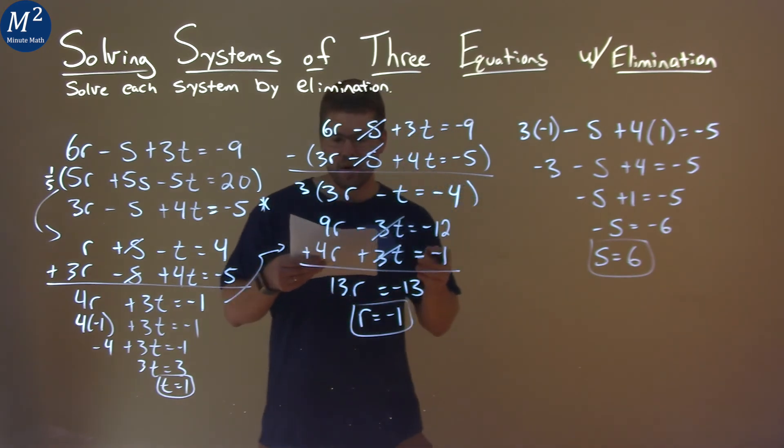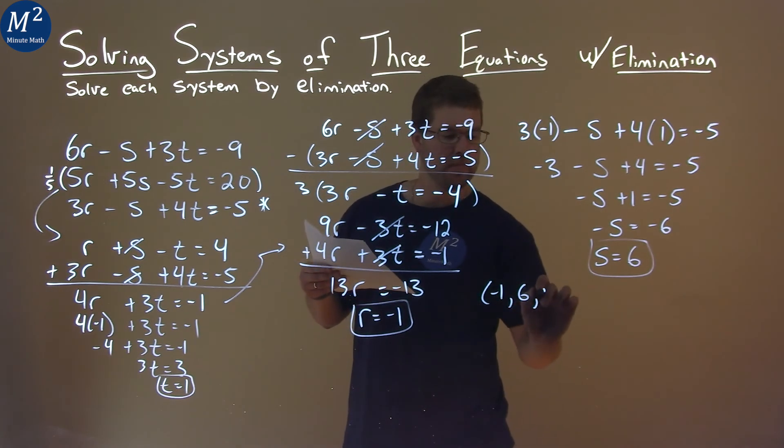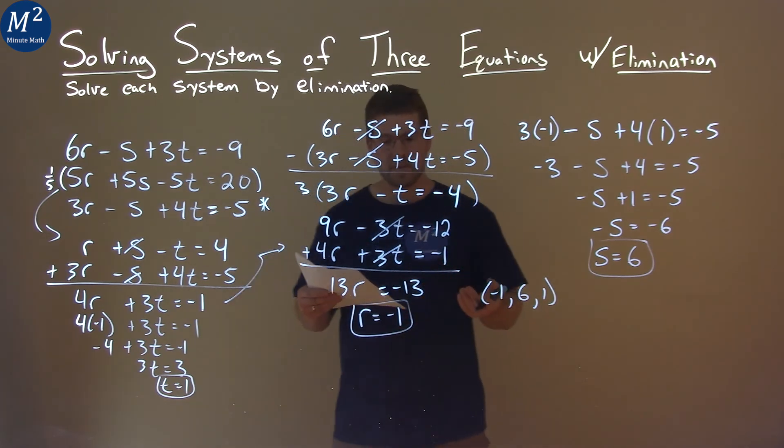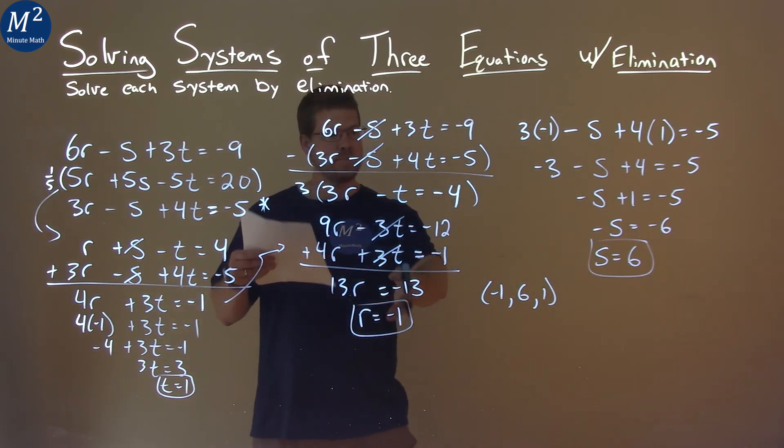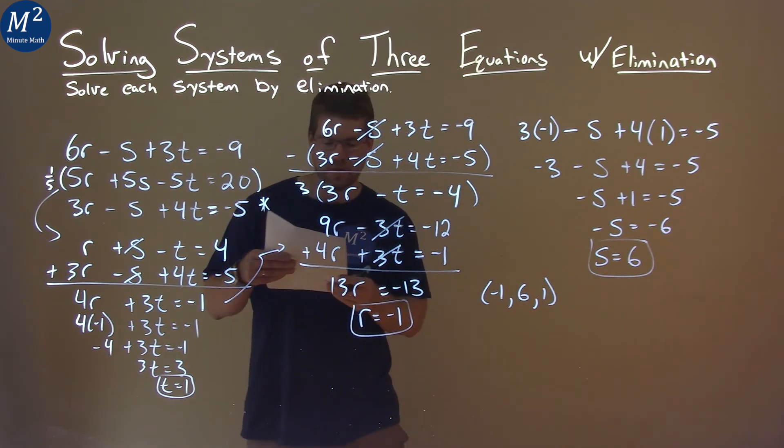And so we have our r, our s value, and our t value. We can write as a coordinate point, as negative 1, comma 6 in the order they gave it to us, comma positive 1 for the t. And so our final answer here is r equals negative 1, s is 6, and t is positive 1.